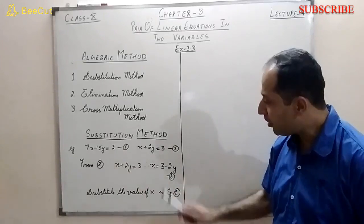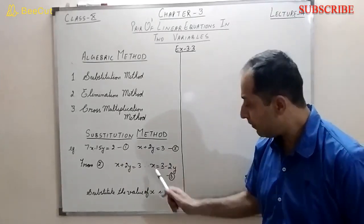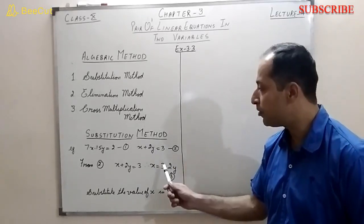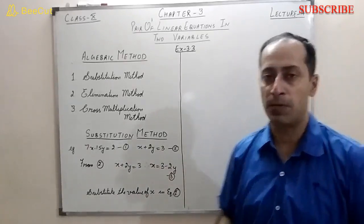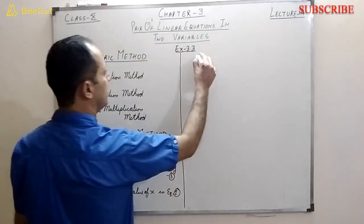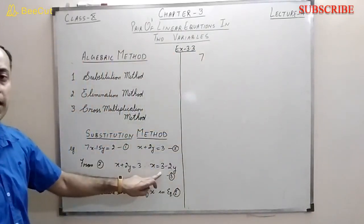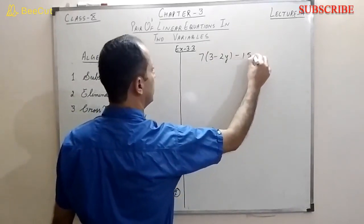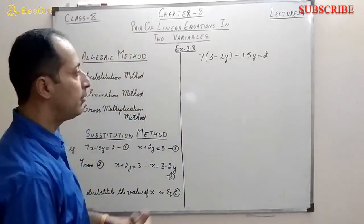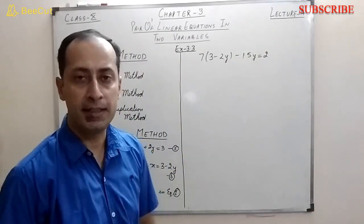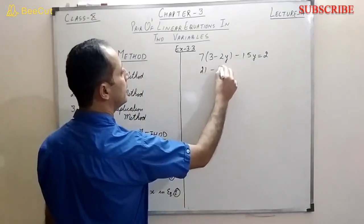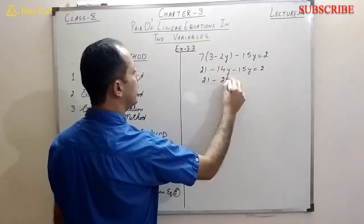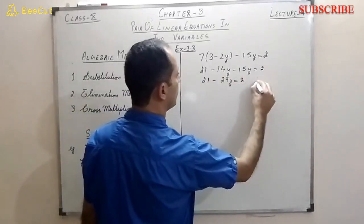Now I substitute the value of x from equation 3 into the first equation — not the second, since that's where equation 3 came from. Substituting into 7x minus 15y equals 2, I replace x with (3 minus 2y): 7(3 minus 2y) minus 15y equals 2. This becomes a linear equation in one variable. Expanding: 21 minus 14y minus 15y equals 2, which gives 21 minus 29y equals 2.